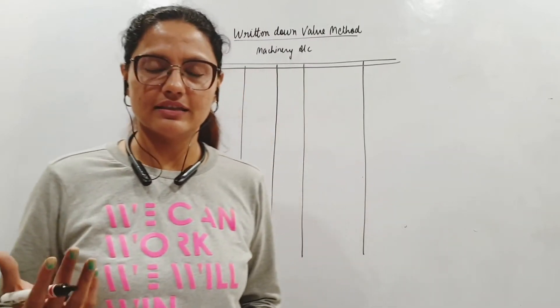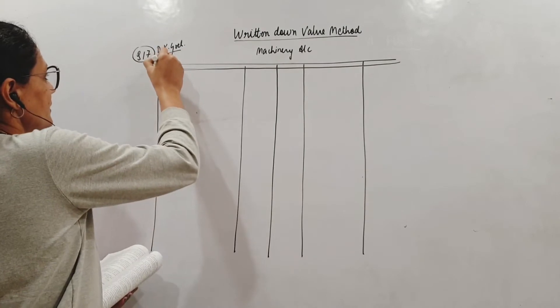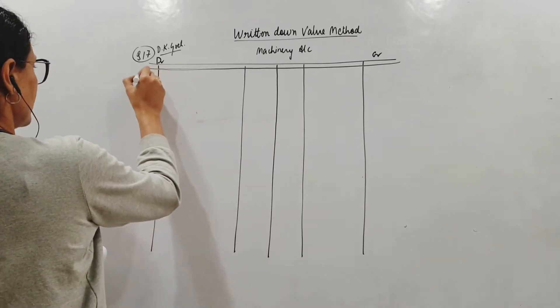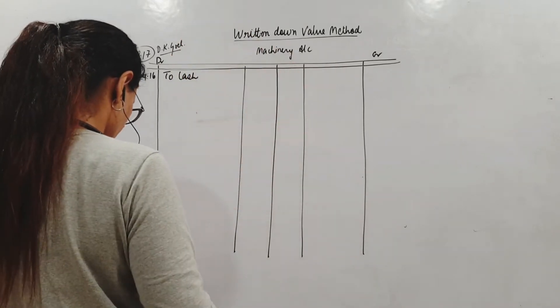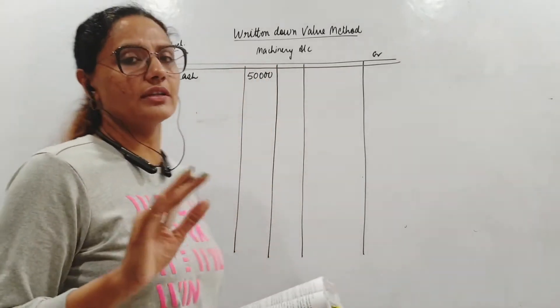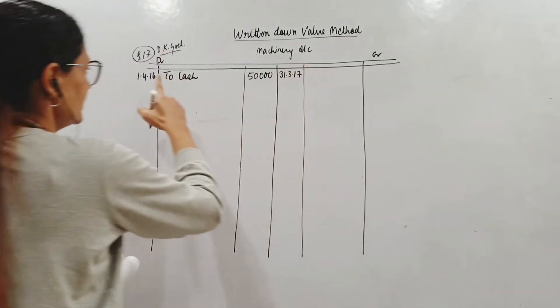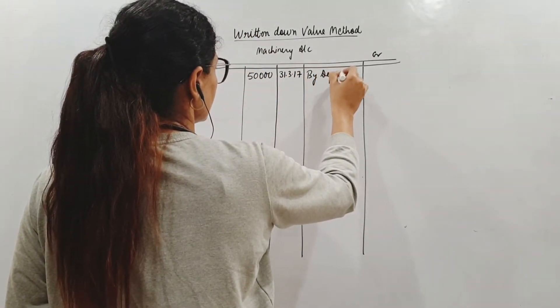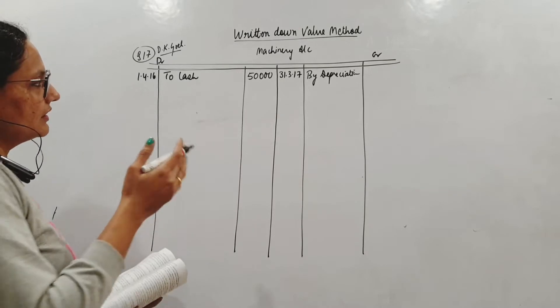On 1st October it's purchasing additional machine. And the part of the machine which was purchased on 1st April 16 costing 7,000 was sold for 3,600 on 30th September 19. So prepare machinery account for 4 years. The depreciation is provided at the rate of 10% per annum diminishing balance method. Reducing balance method we just did in the last video.